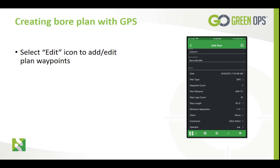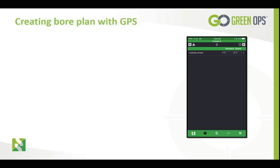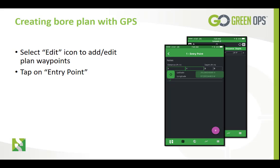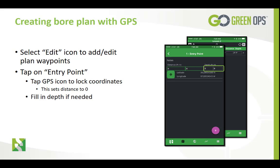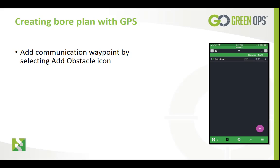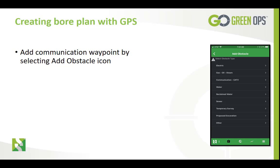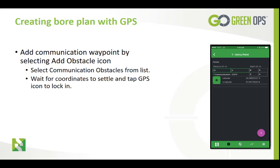Now we are ready to add or edit waypoints. Select the edit icon from the bottom tab. Tap on the entry point to view the GPS lock button. Once the lat/long numbers have settled, tap the GPS icon to lock in the coordinates. This will also set the entry distance at zero. All other waypoints and obstacle distances will be measured from this point. Fill in depth if needed. We are going to add a communication waypoint by selecting the add obstacle icon. Select the communication obstacle from the list, then wait for the GPS coordinates to settle and tap the GPS icon to lock in the coordinates.